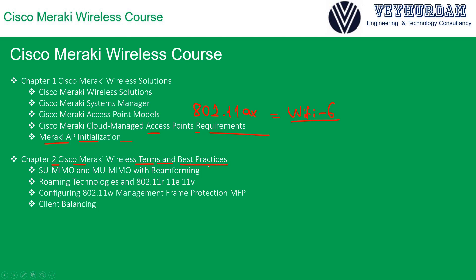In Chapter 2, we will learn Cisco Meraki wireless terms and best practices. Single-user MIMO, multi-user MIMO, and beamforming will be understood deeply. Then we will understand roaming technologies — why we need 802.11r, 802.11e, and 802.11v, what those are, and how they improve the client experience. We will also understand how to configure 802.11w for Management Frame Protection (MFP).